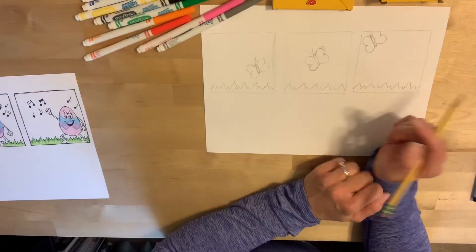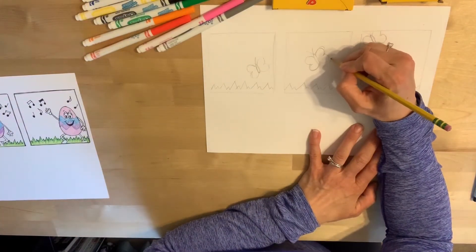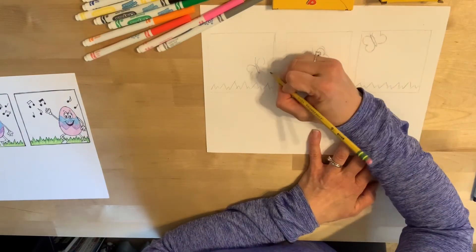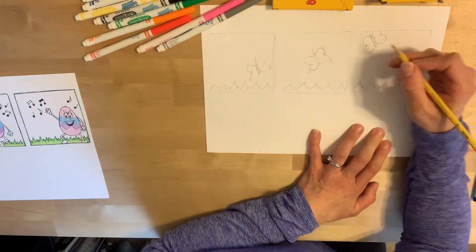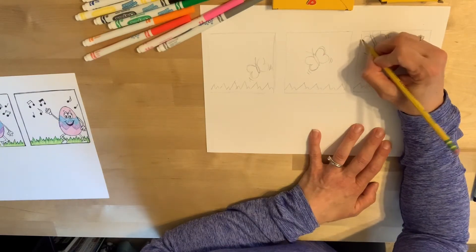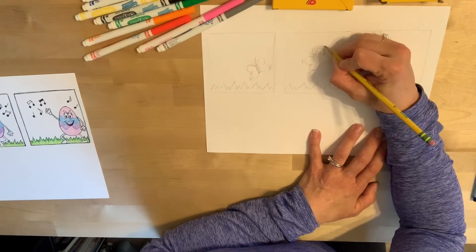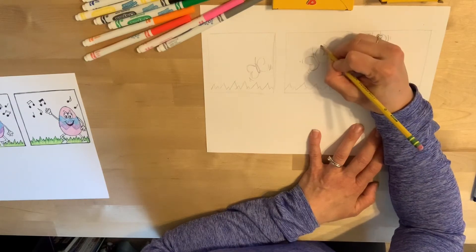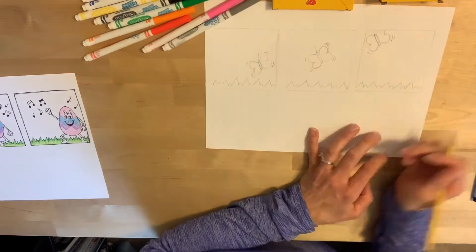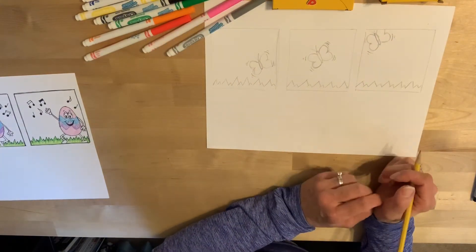For here with the butterfly flying, all I'm going to do is add some little action lines around the butterfly's wings. And it makes it look like those wings are fluttering and the butterfly is flying.